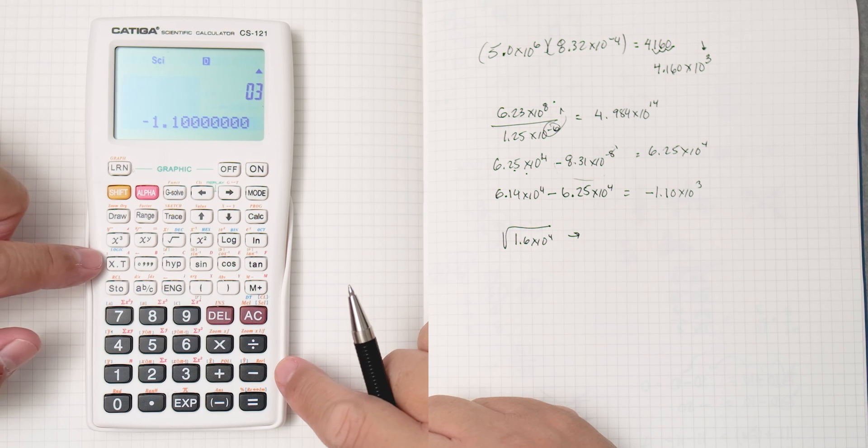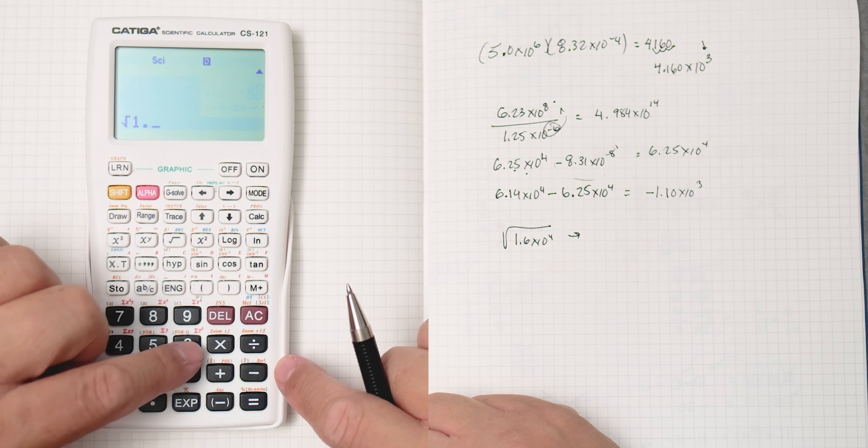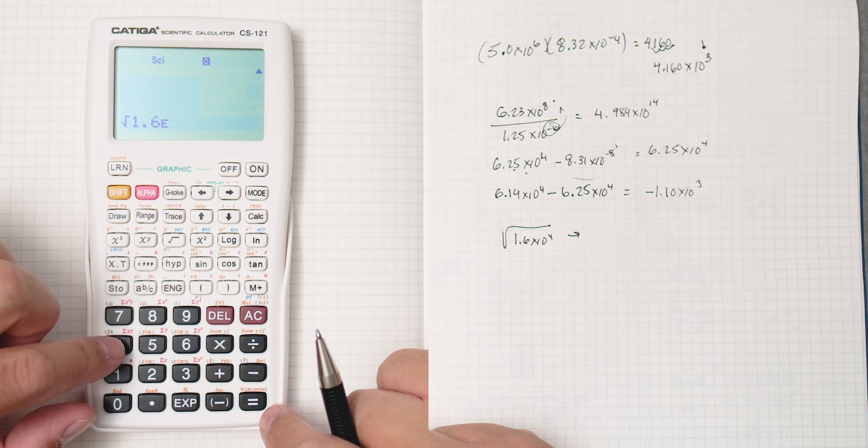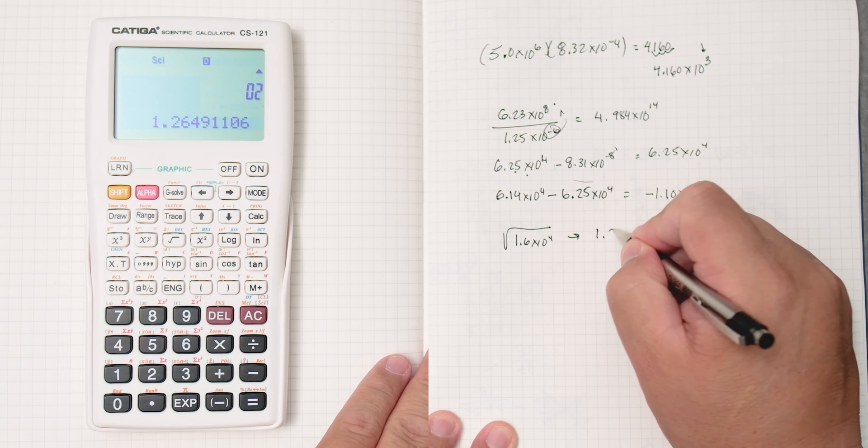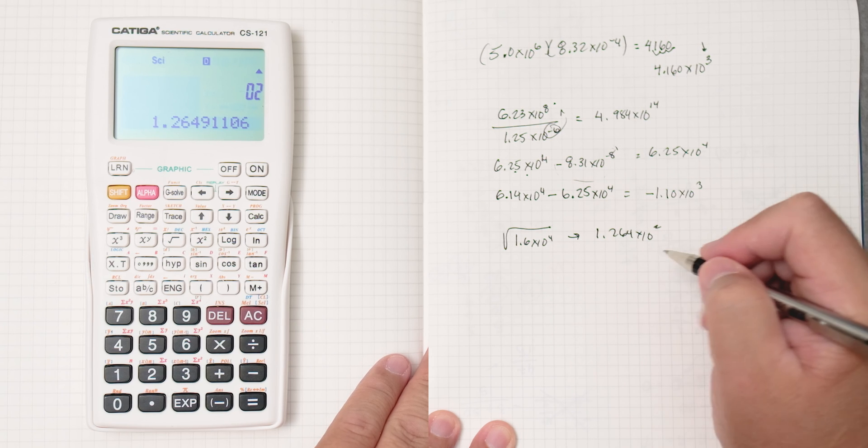The square root of 1.6 times 10 to the 4th. Here, we do the square root and then 1.6 and then times to the power of 4 equals, and we get 1.264 times 10 to the 2nd power.